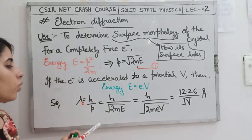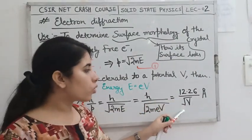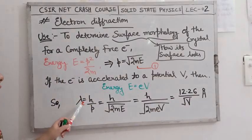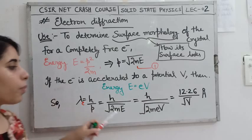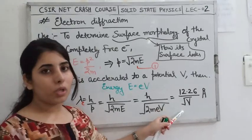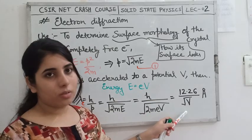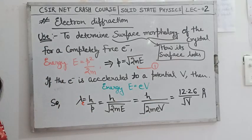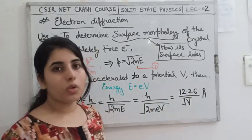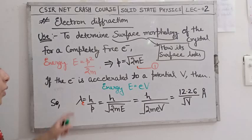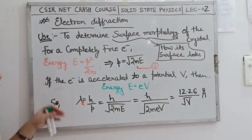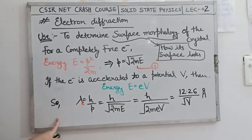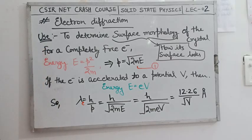Solving this value, we get the electron wavelength as 12.26/√V Angstroms. This means the electron wavelength is inversely proportional to the square root of the accelerating potential V. This is the formula you need to remember for the wavelength of an electron.